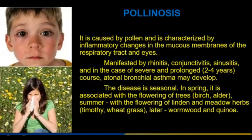Pollinosis is caused by pollen and is characterized by inflammatory changes in the mucous membranes of the respiratory tract and eyes. It is manifested by rhinitis, colonic activity, and sinusitis, and in severe and prolonged cases over two to four years, atopic bronchial asthma may develop. The disease is seasonal: in spring it is associated with flowering of trees; in summer with flowering of linden and meadow herbs.